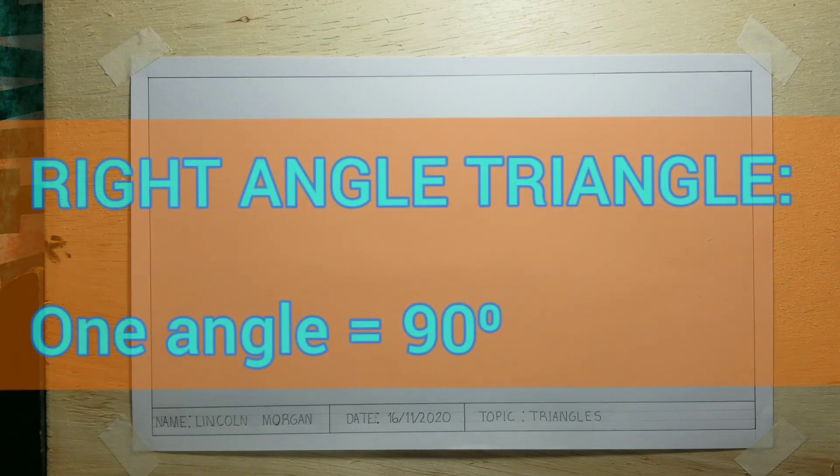I will now construct a right angle triangle. This is a triangle where one angle is 90 degrees. I will first draw my line AB to measure 60 millimeters and also construct a 90 degree angle at point A.